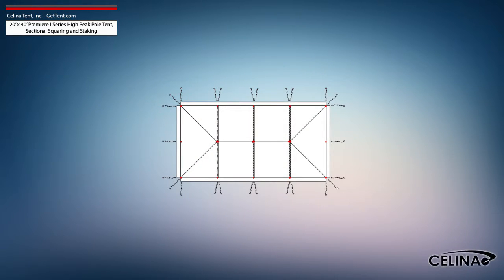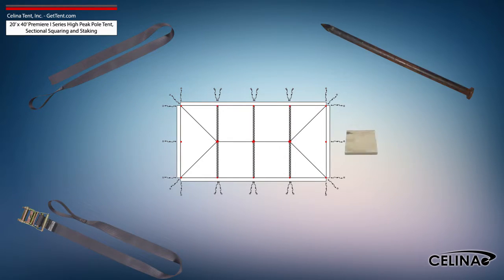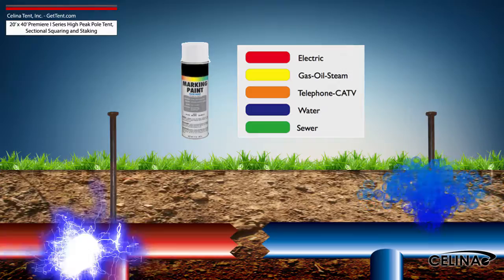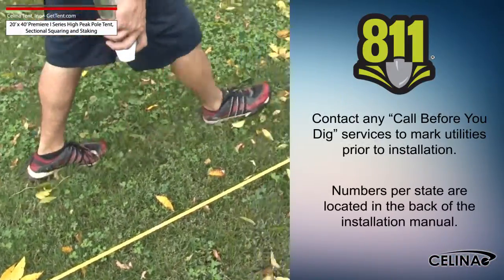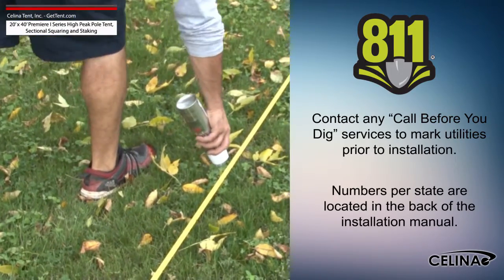Tent squaring allows the installer to accurately place all tent hardware and install tent stakes prior to beginning setup, and helps them avoid any marked underground utilities. Utilities must be marked by your state's local utility services prior to any tent installation.